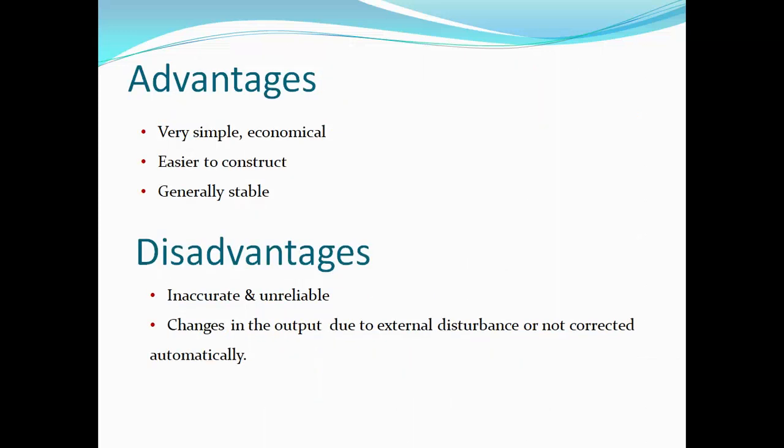What are the advantages of an open loop system? Open loop systems are very simple and economical; it is easier to construct and it is generally stable. What are the disadvantages of an open loop system? It is inaccurate and unreliable. Changes in output due to external disturbance are not corrected automatically.